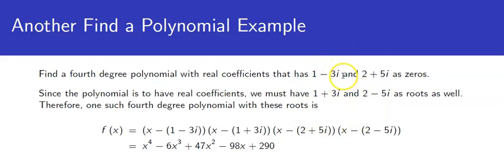So since we're told that 1 minus 3i is a zero, 1 plus 3i also must be a zero. Likewise, since we're told that 2 plus 5i is a zero, 2 minus 5i also has to be a zero.